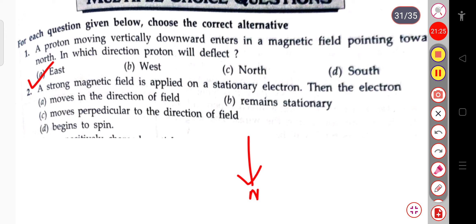The next question: a strong magnetic field is applied on a stationary electron. The electron will move in the direction of the field, remain stationary, move perpendicular to the field, or begin to spin. The electron will remain stationary.